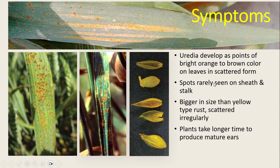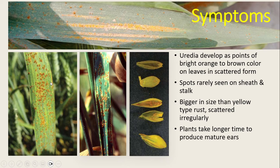The spots are really seen on the leaf and stalk, and they are bigger in size than yellow type rust. They are scattered irregularly, whereas in stripe rust the uredinia are seated in lines.